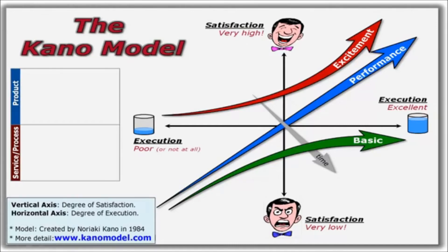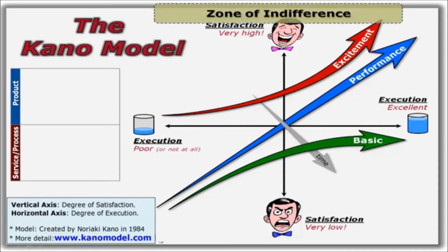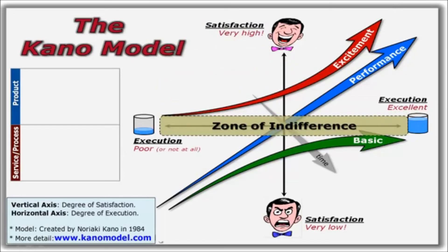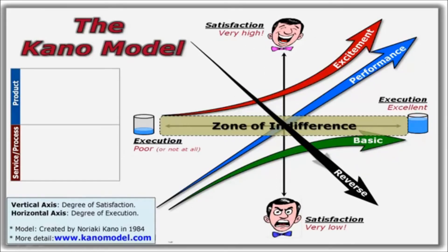Two additional but relatively rare requirement categories in the Kano model are the indifferent and reverse requirements. Indifferent requirements are features or needs that customers don't care about whether they're present or absent. Reverse requirements, even rarer, are features, needs, or attributes that decrease satisfaction when present and increase satisfaction when they're missing.